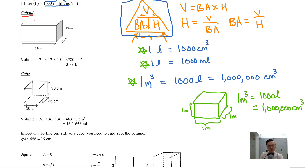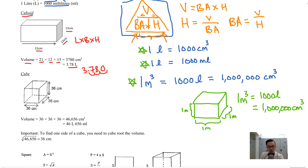Let's look at the volume of a cuboid. If you want to find the volume, it's simply length times breadth times height. Take this as 21, this as 12, and the height is 15. So it's 21 times 12 times 15 equals 3,780 cm³. You need to divide by 1,000, so 3,780 divided by 1,000 — move back 3 decimal places — the answer is 3.78 liters.